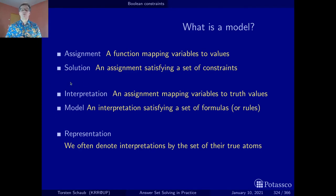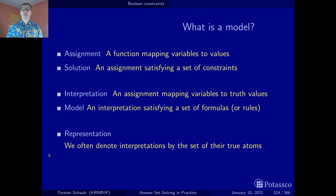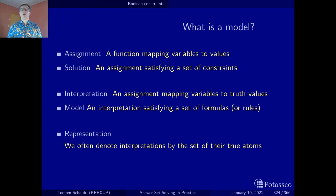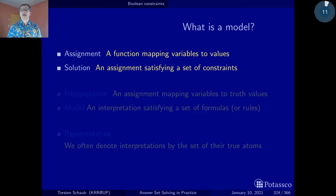Sometimes we represent these just by sets. Now, if we want to characterize stable models, it's not enough to look at interpretations that satisfy the set of formulas — that satisfy the program. There are many more implicit constraints to be taken into account to capture closed-world reasoning. For this reason, and also because we now want to talk about implementations, we go back to assignments and solutions.